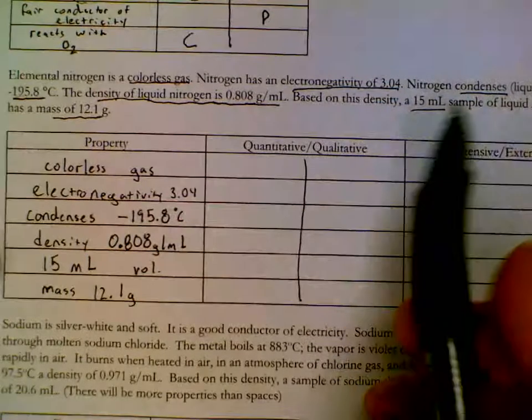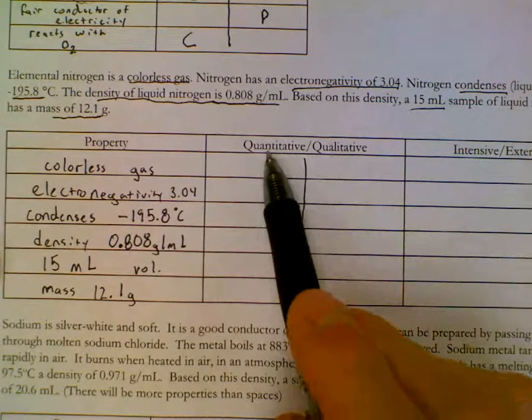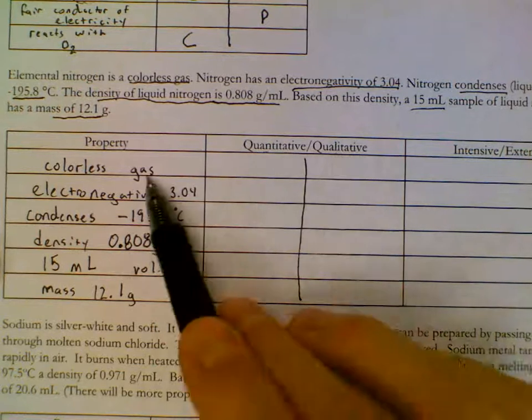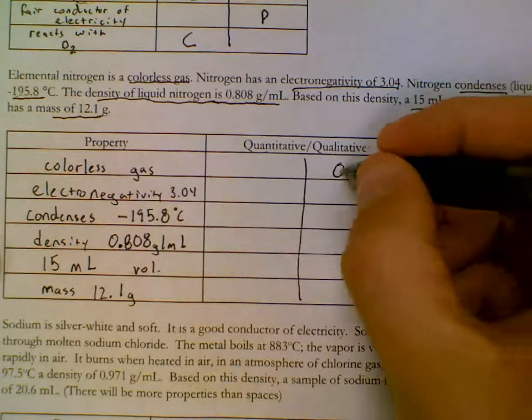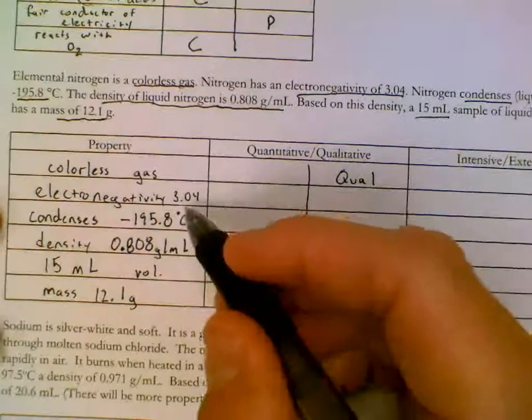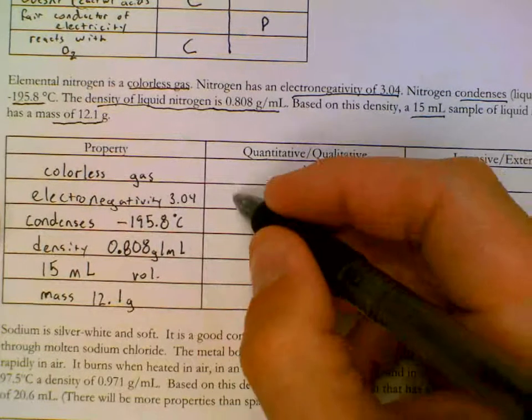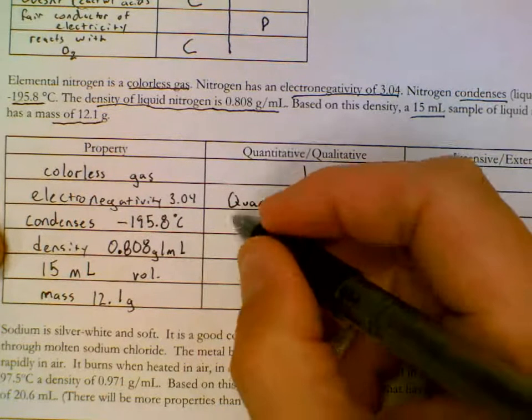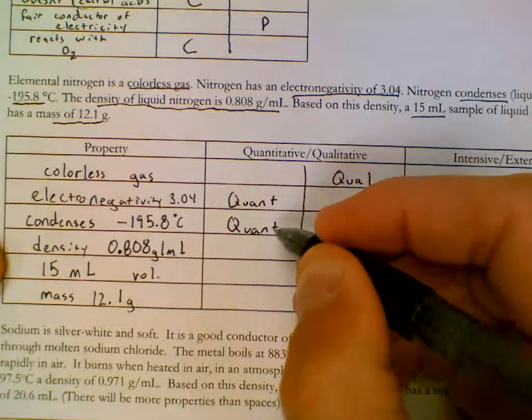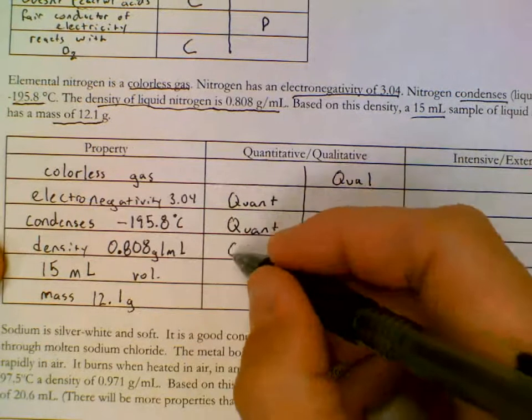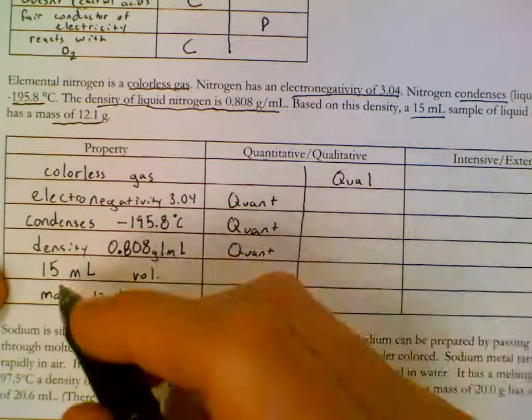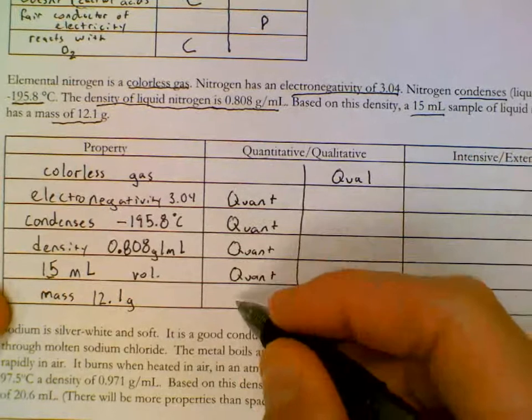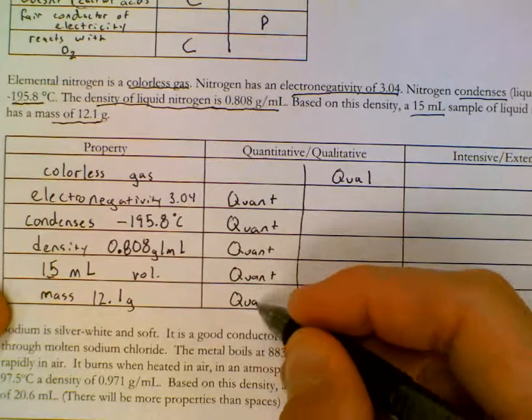So we're using quantitative for numbers, qualitative for qualities. Colorless gas is qualitative. No number there. Electronegativity 3.04. It's a number. See a number here. Quantitative. See a number here. Quantitative. I see a number, 15 milliliters. I see a mass number. Quantitative.